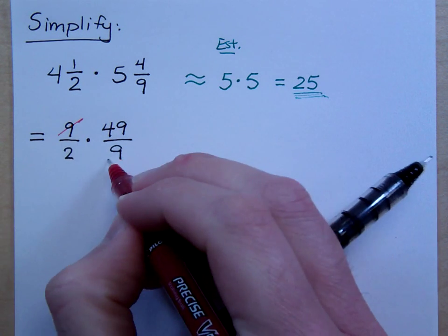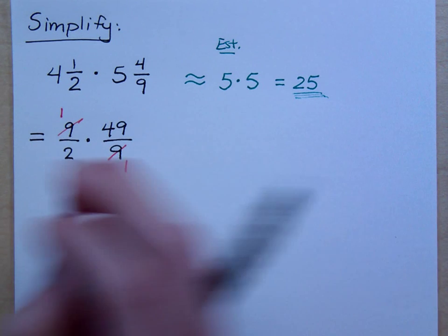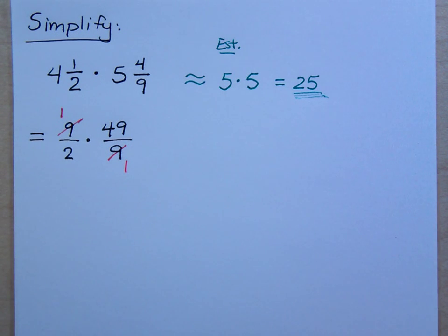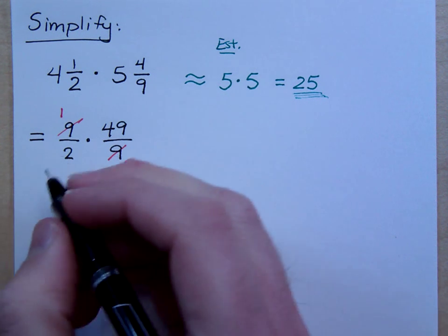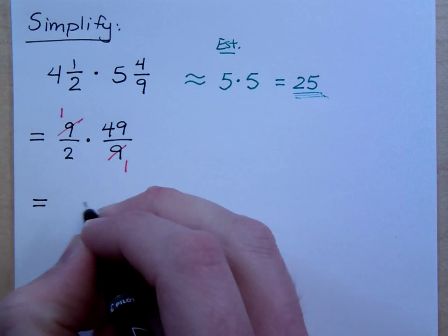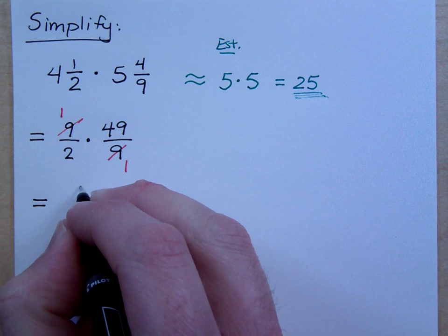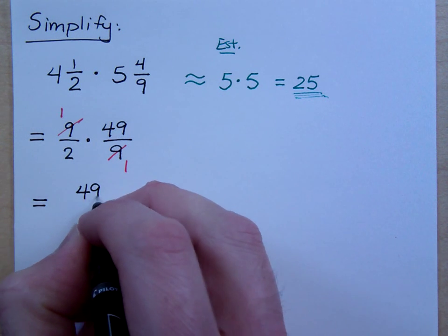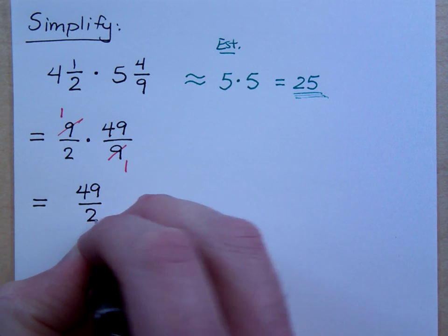So this reduces to give you a 1. Can I reduce the 49 with anything? Or the 2 with? Nope. All right, so what do I have here? This is 49 over 2. Now, let me give you a general rule of thumb here.